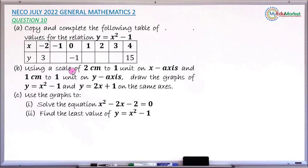Question 10b says: using a scale of 2 cm to 1 unit on the x-axis and 1 cm to 1 unit on the y-axis, draw the graphs of y equals x squared minus 1 and the linear function y equals 2x plus 1 on the same axes.